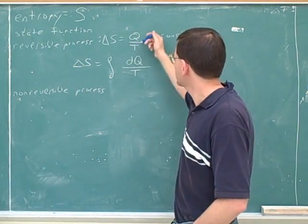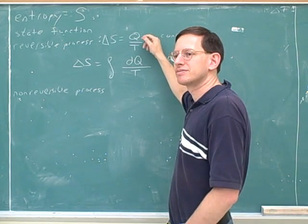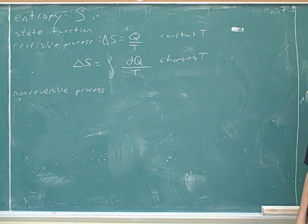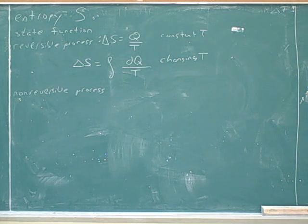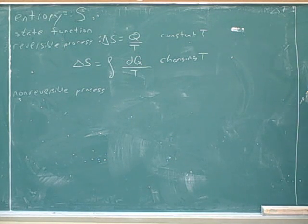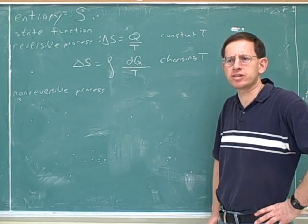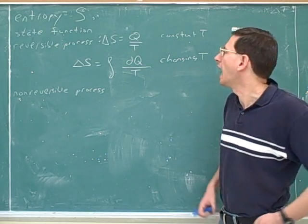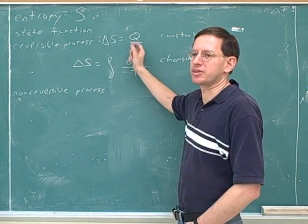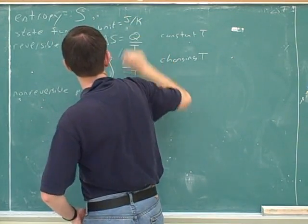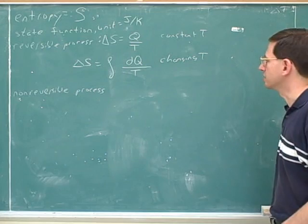According to this formula, what should be the units for delta S? Q — heat — is basically a form of energy transfer. The units for energy are joules. So the units for Q would be joules, and if you put it over the temperature, that would be joules per Kelvin. It's always good to know the units for each new concept. So the units for entropy change are going to be joules per Kelvin.